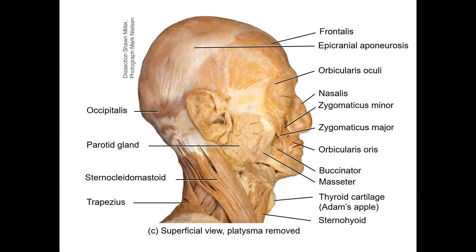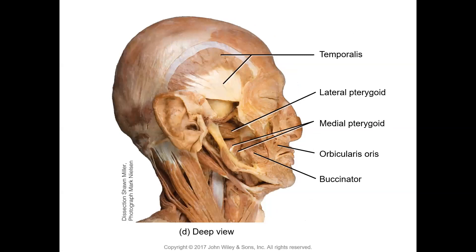Two new muscles seen in this diagram are the sternohyoid and the trapezius, which will be discussed in more depth later. Figure 14.2d gives the deep view of the muscles where the superficial muscles have been dissected — the parotid gland and masseter have been removed — revealing the temporalis, lateral and medial pterygoid, orbicularis, and a better view of the buccinator muscle.